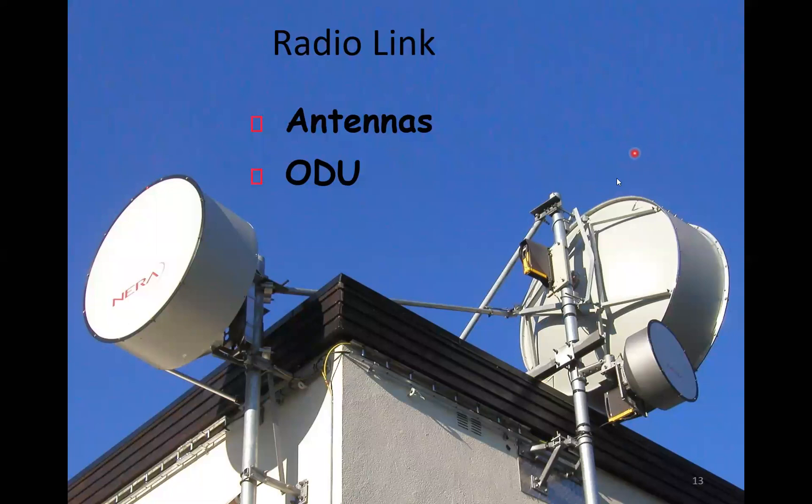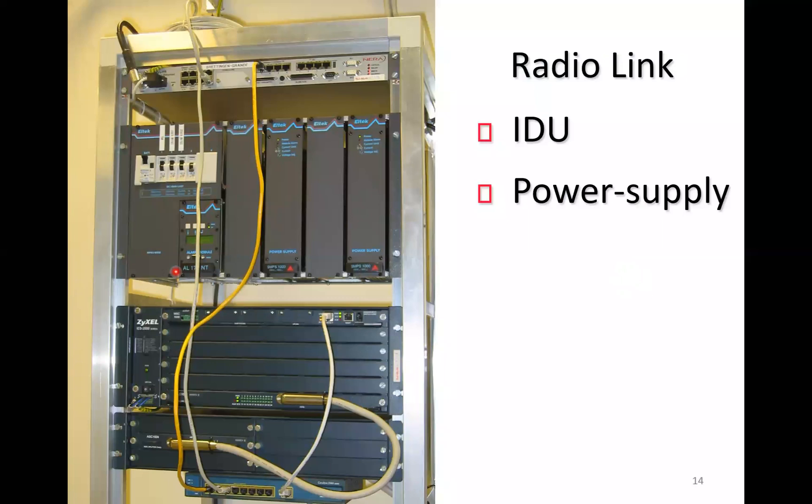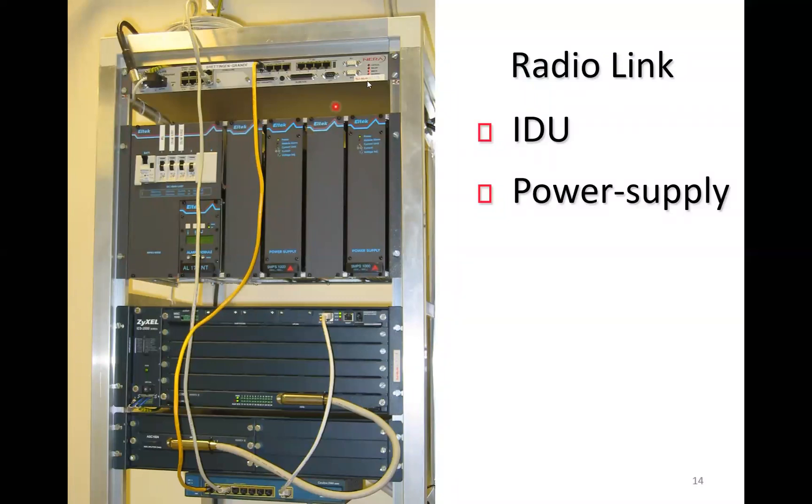Here you see a typical lineup of antennas. Here you see one antenna shooting in this direction and one in this direction. And here is a smaller one. This is just shooting a kilometer or something. This is shooting 30-40 kilometers. And this is shooting about 20 kilometers. Here is an indoor part. And here you see the indoor part of the radio. And then you have power supply here. And in this case we are using the radio with an ADSL system.